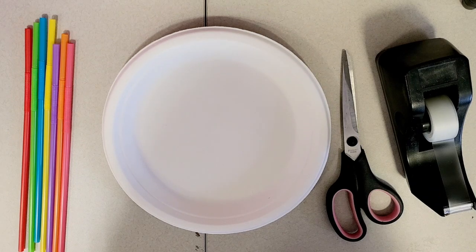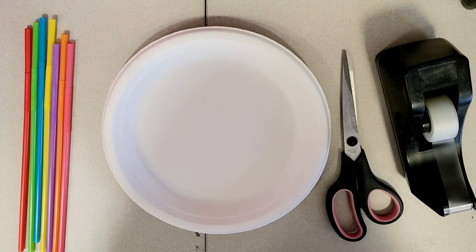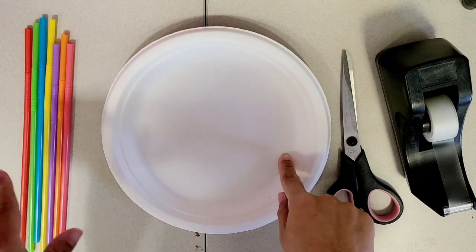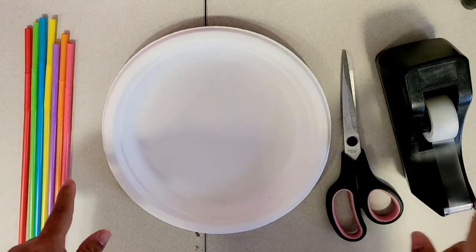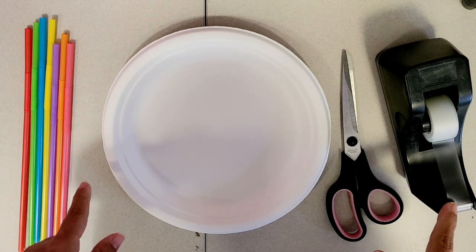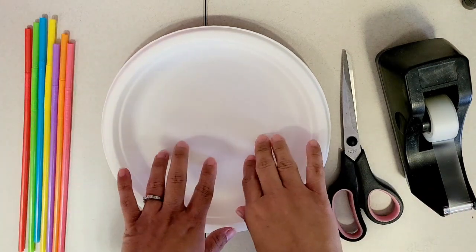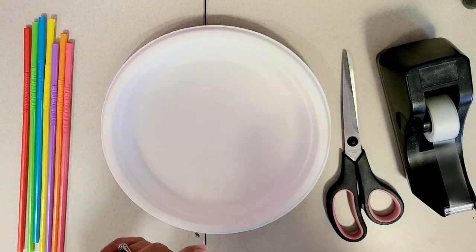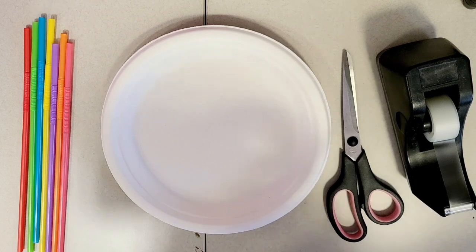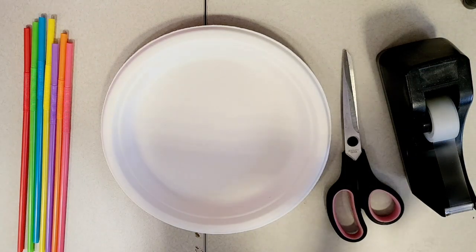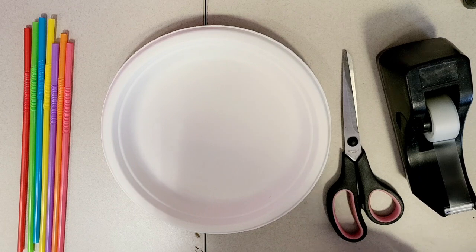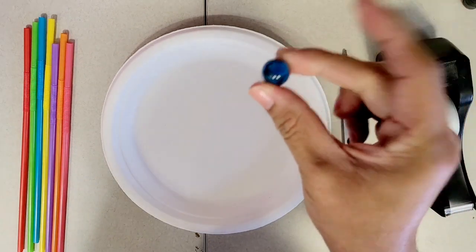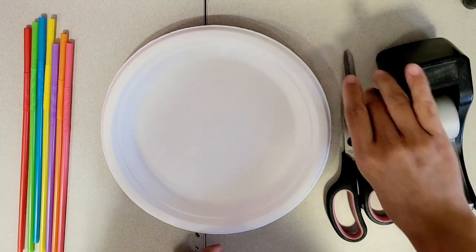Alright friends, so for this STEAM activity we're going to need a paper plate, straws, scissors, and tape. And what we're going to do is we're going to construct a maze using the straws and the plate so that a marble can maneuver its way through. So you will also need a marble that you're going to use to see if your maze is successful.